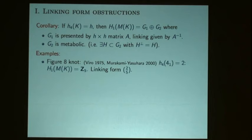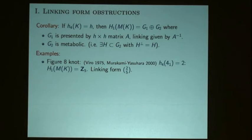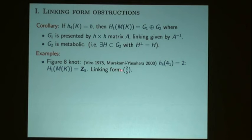Basic examples that arise from this: first, the figure-eight knot, which Oleg observed in 1975 and was rediscovered by Yasuhara using other means in 1996, and again using linking forms in 2000. It's hard reading the literature because every paper has the figure-eight knot as the example. In any case, the linking form of the two-fold cover of the figure-eight knot is two-fifths, and that's not the inverse of a one-by-one matrix with determinant five — there's no change of basis in Z5 that turns it into plus or minus one-fifth.